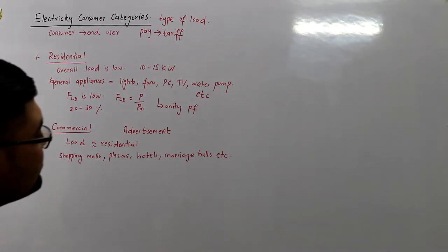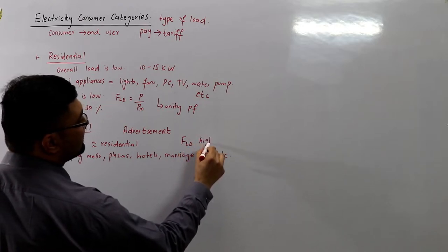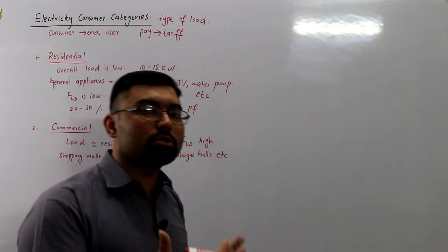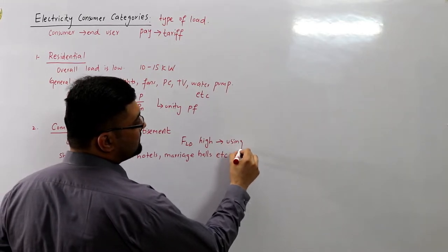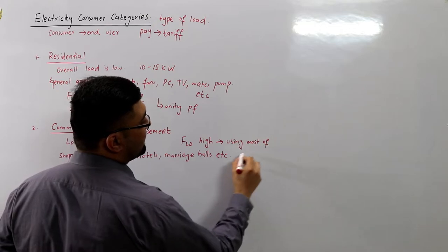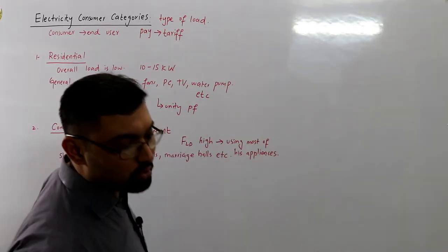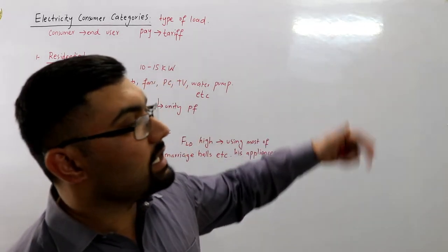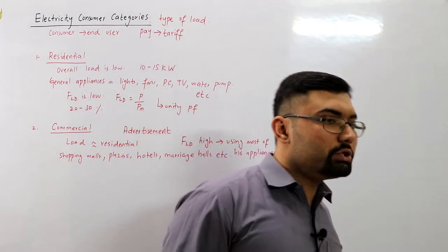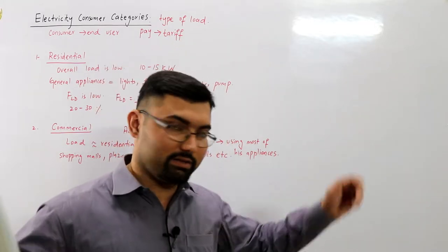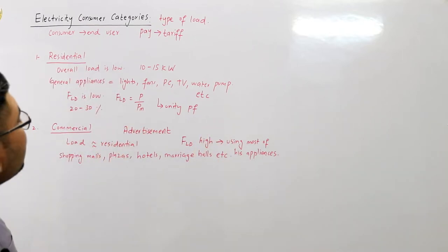The load factor is relatively higher for commercial consumers because they keep most of their appliances running to attract more people. For example, a shop with 10 lights and two air conditioners attracts more customers than one with five lights and one air conditioner — that is advertisement.